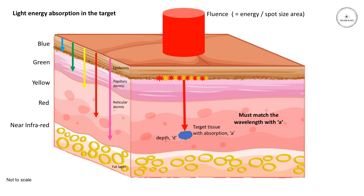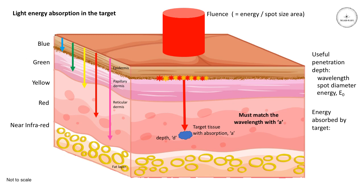When we discussed the penetration depth of light previously, it was purely with respect to the wavelength. A more useful definition is the useful penetration depth, which depends on the wavelength, the spot diameter, and the energy at the surface. Combined, these give you the fluence or energy density, which tells us the amount of energy which reaches the target depth. The amount of energy finally absorbed by the target depends on the wavelength, the depth of the target, the absorption coefficient of that target, and the scattering coefficient of the surrounding dermal medium.